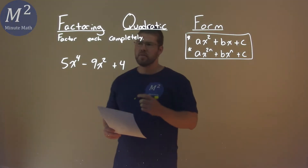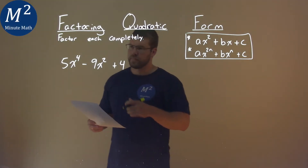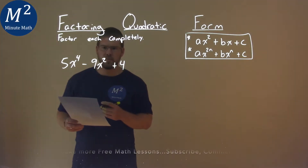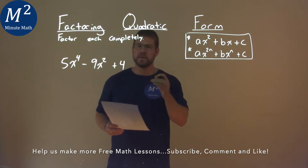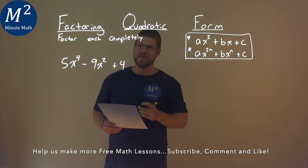We're getting this problem right here: 5x to the 4th minus 9x squared plus 4, and we need to factor completely.